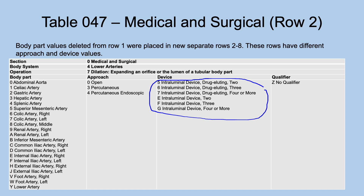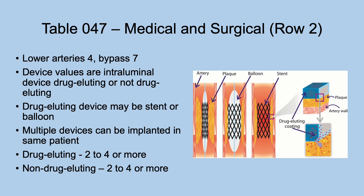So you have numbers of devices for those rows deleted from before. The devices are intraluminal devices — drug-eluting or not drug-eluting. The drug-eluting device may be a stent or a balloon, and drug-eluting comes in counts of 2 to 4; non-drug-eluting also 2 to 4 or more. You can see the artery, the plaque, a balloon that blows up and expands the stent — or you just have a stent.